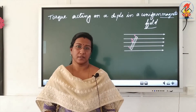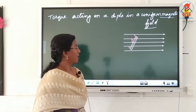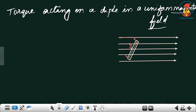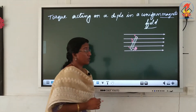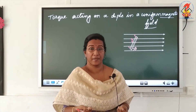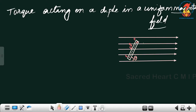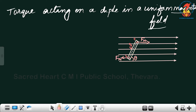Students, we are going to derive the torque acting on a dipole placed in a uniform magnetic field. Imagine you have a uniform magnetic field around the x-direction — arrows represent the uniform magnetic field. I have placed a magnet at an angle theta with the field. When placing a magnet in an external magnetic field, it experiences a force: for the north pole the force is along the field direction, whereas for the south pole the force is opposite to the field direction.